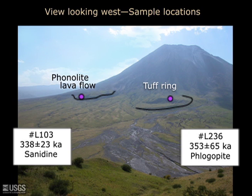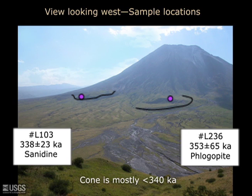Additional confidence in the ages stems from having used different mineral phases — sanidine and phlogopite — each of which is potassium rich. Since these two rock units peek out from the base, we consider the existing stratovolcanic cone to be mostly younger than about 340,000 years.